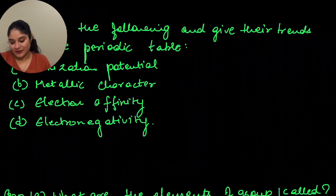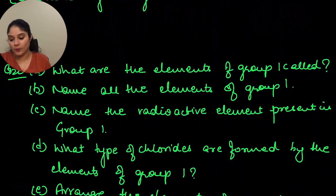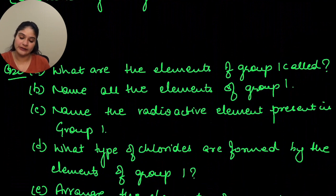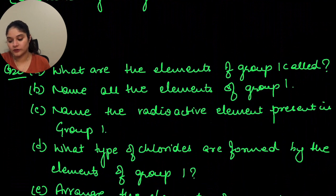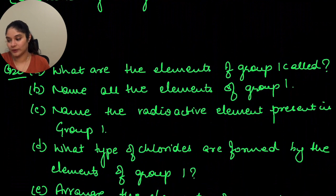What are the elements of group 1 called? Group 1 is called alkali metals. Name all the elements of group 1: hydrogen, lithium, sodium, potassium, rubidium, cesium, and francium. The radioactive element present in group 1 is francium. What type of chlorides are formed by elements of group 1? They form ionic chlorides, because group 1 elements have a tendency to lose electrons and can easily make ionic compounds with chlorides.